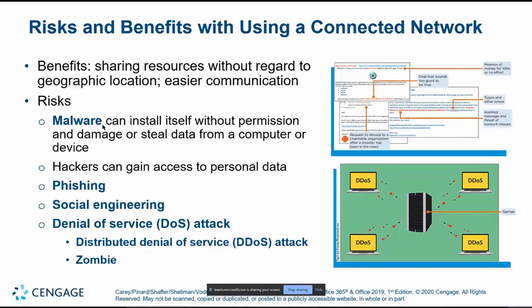Moving on to network threats — malware, phishing, and social engineering we've already covered. One important threat to highlight is denial of service. Malicious individuals or groups flood a network with garbage data, causing service interruptions or outages, usually to disrupt business for some kind of gain or recognition. They may use compromised devices called zombies — infected through malware or hacking — to send this garbage data, for example disrupting Amazon's ability to sell products.